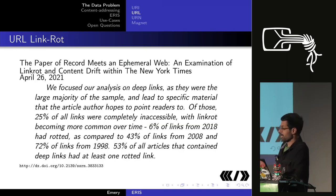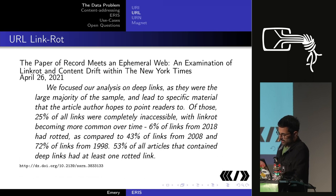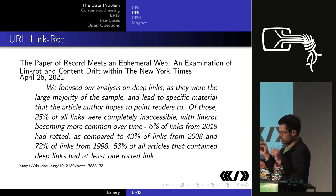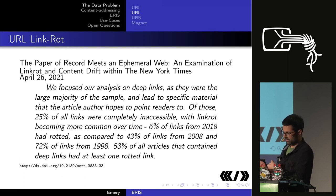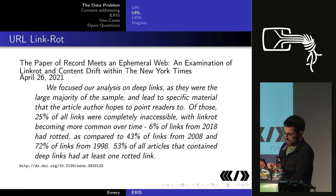The other problem is link rot. DNS records get more expensive over time. A study this year on the New York Times found that 25% of all deep links — links to a specific page on a website — were completely inaccessible. That figure was 6% from 2018, 43% from 2008, and 72% from 1998. Half of all articles containing deep links contain at least one rotted link.